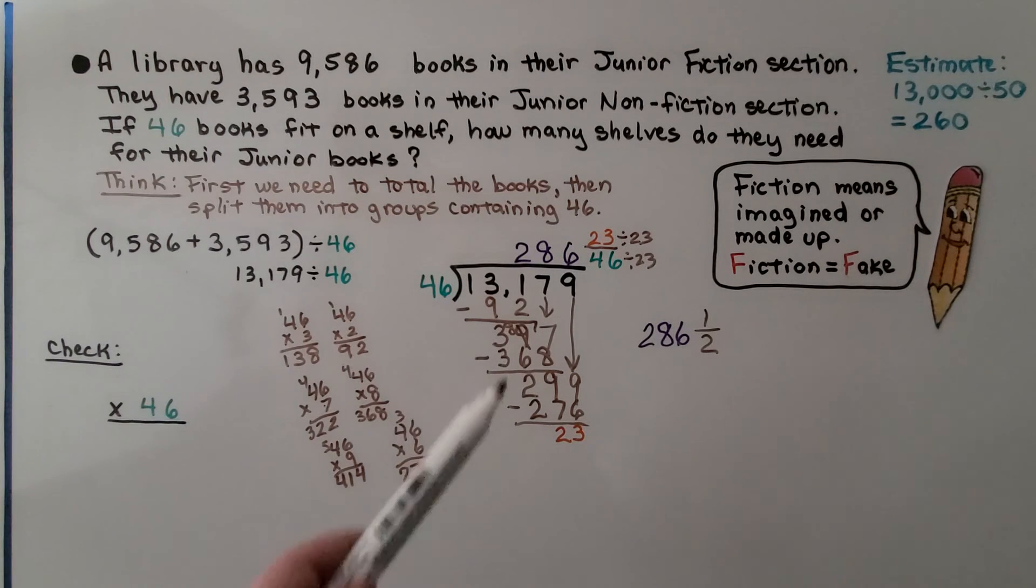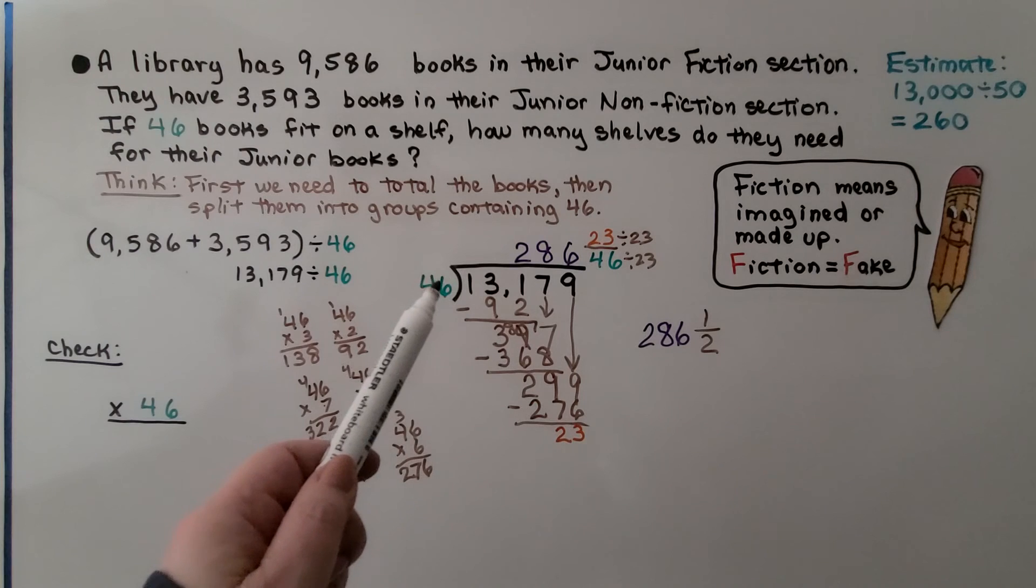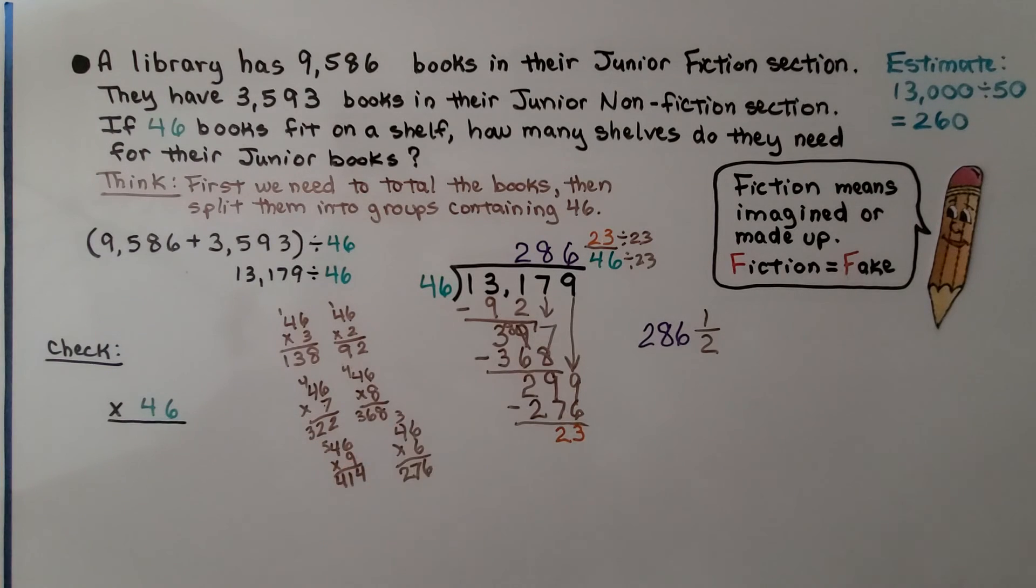But remember, if you get stuck doing this, do a little multiplication on the side to help you figure out if you're too high, too low, what's just right, and then you'll know what to subtract. And remember that what's left over is the numerator and the divisor is the denominator for our remainder to be written as a fraction.